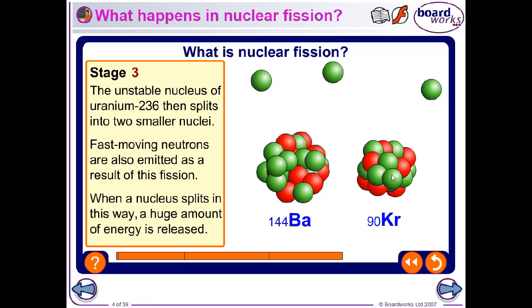And when these two daughter nuclei are released, they fly off in opposite directions, crashing into neighboring atoms, causing them to vibrate, and hence this being heat energy that is being released.